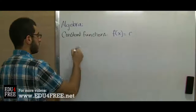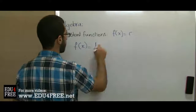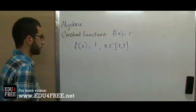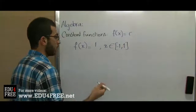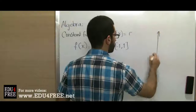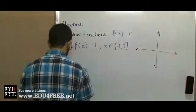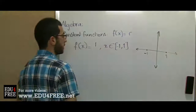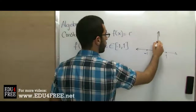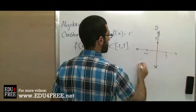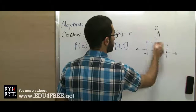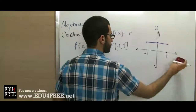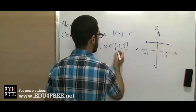Another example: f(x) = 1 and x belongs to [-1, 1]. We draw the Cartesian plane, then plot -1 and 1 — both are included in the line. f(x) = 1, so the 1 on the y-axis gives us our function as a horizontal segment. Both endpoints are included because the interval is closed.